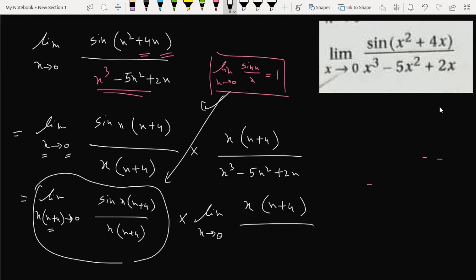If we take x from this expression, this function, we get x squared minus five x plus two. Easily we can cancel x here. The expression becomes one times limit x tends to zero of x plus four by x squared minus five x plus two.